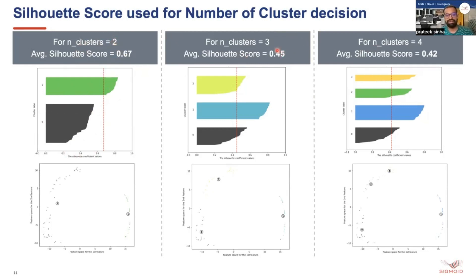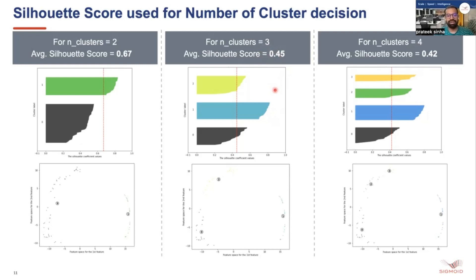We are left with two options: three and four clusters. For both, the silhouette scores of all points are higher than the average. However, for four clusters the cluster division is unequal — clusters three and two are very small compared to the others. For three clusters, the clusters have similar shapes and contain almost equal numbers of points, making it the better option. Both approaches conclude that three clusters is the best decision.